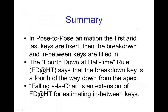In summary, for pose-to-pose animation, you decide on the first and last keys, fix those, and then start filling in keys in between, starting with the breakdown and then any further in-betweens. The fourth down at half time rule says the breakdown key halfway in time from the apex to the last key has a spacing a fourth of the way down from the apex. Falling a la Chai is an extension of this that gives you further in-between keys besides the breakdown. Hopefully, between the odd rule and fourth down at half time, you'll be able to create believable slowing out for falling motion.